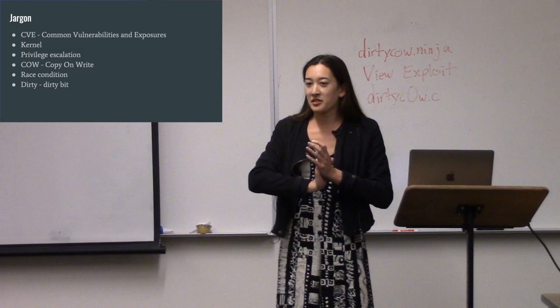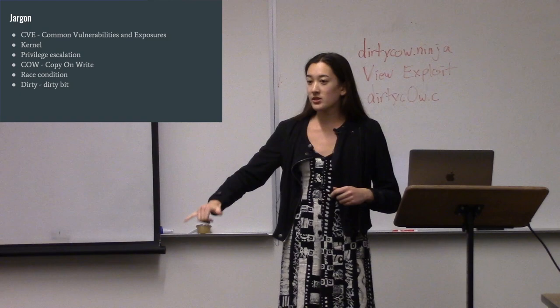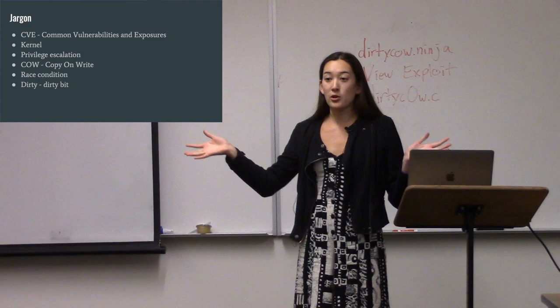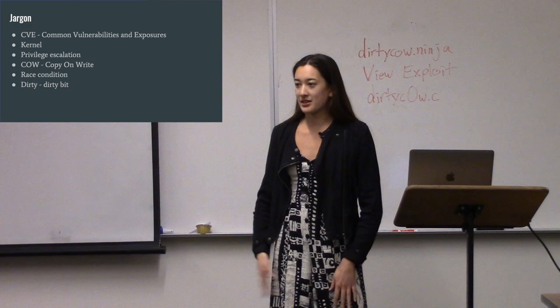First, a little bit of technical jargon — stuff you'll hear generally, not just within the scope of this talk. First is CVE, which stands for Common Vulnerabilities and Exposures. This is basically a compiled list of all publicly disclosed security vulnerabilities. Dirty Cow is on this list and has a CVE number — it's like CVE-2016 because that's the year it was discovered, and then whatever the unique number is.